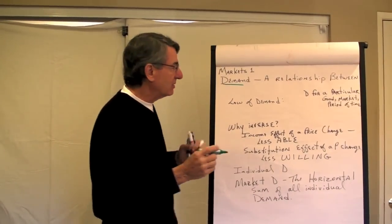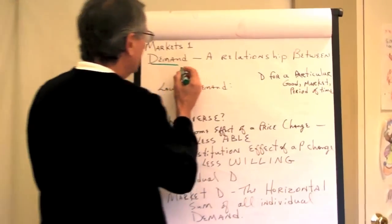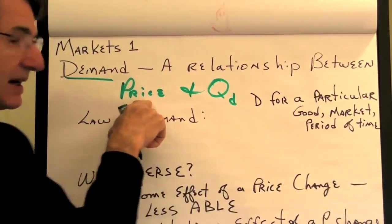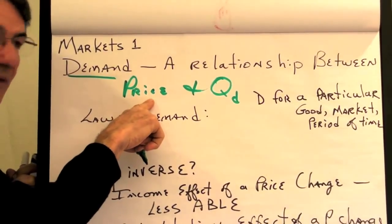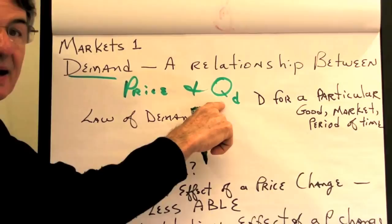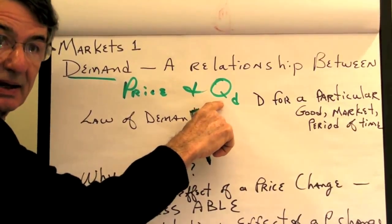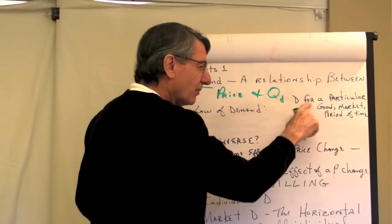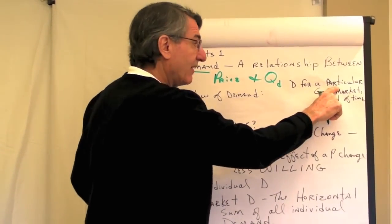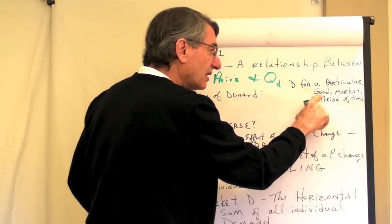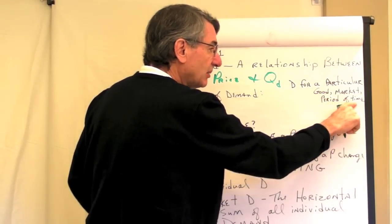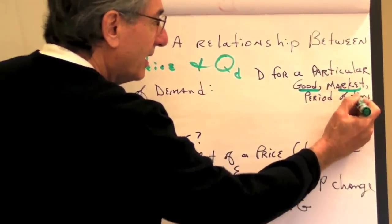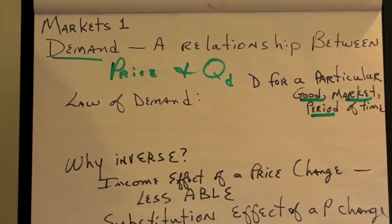Demand is a relationship between price and quantity demanded — that is, the price that somebody has to pay for something and the quantity that will be demanded in our market by buyers in the market. When we talk about demand, we have to be clear that we're talking about the demand for a particular good in a particular market during a particular period of time. So we have to specify the good, the market, and the period of time.